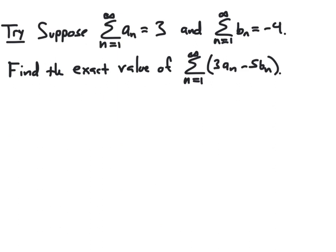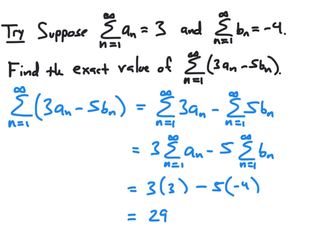If you'd like to try a similar example, pause the video and find the exact value of the sum n equal 1 to infinity of 3a sub n minus 5b sub n, using the same series from the previous example. We can first write the series as the difference of two series: n equal 1 to infinity of 3a sub n minus the series n equal 1 to infinity of 5b sub n. Bringing out the 3 and 5 and substituting the given convergent values, we end up with an exact value of 29.